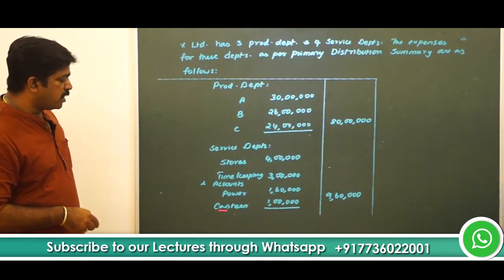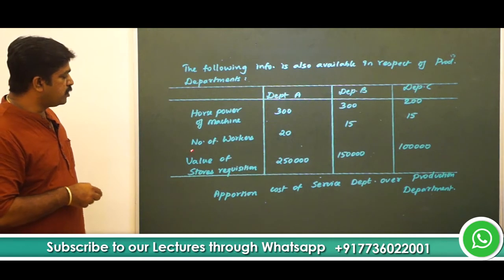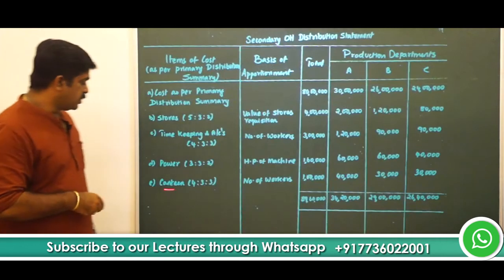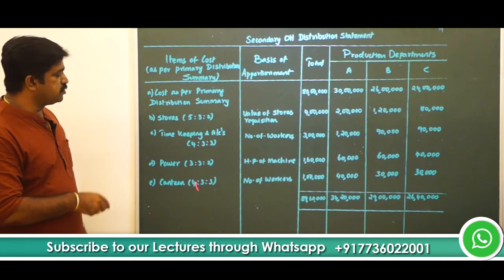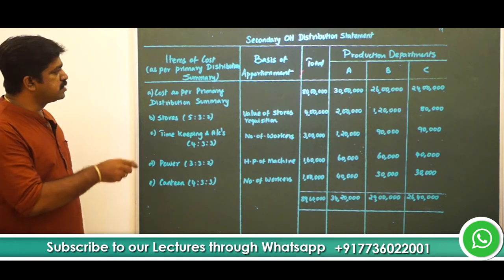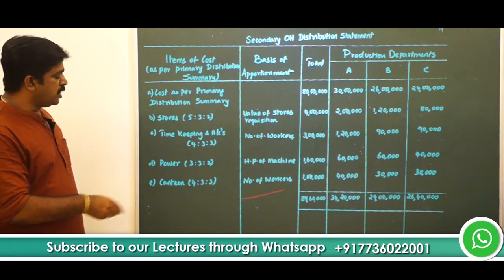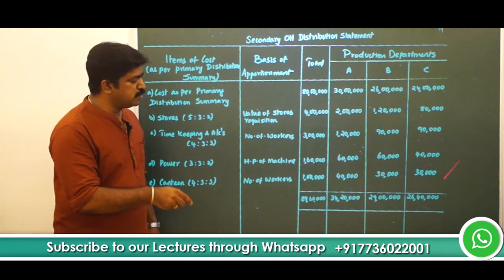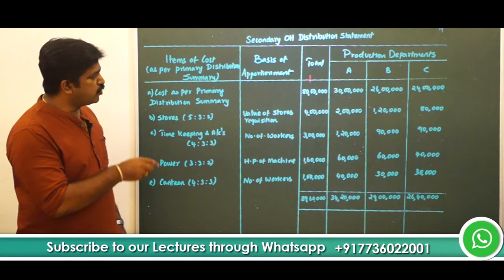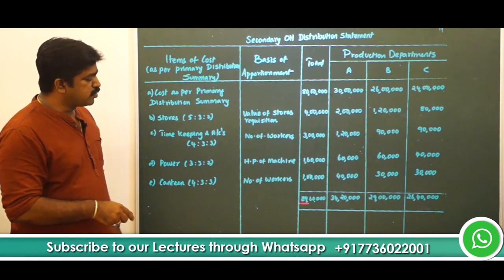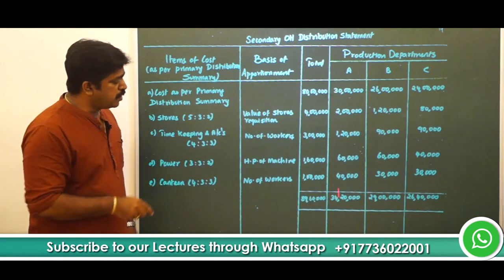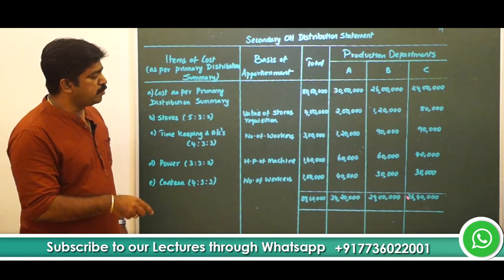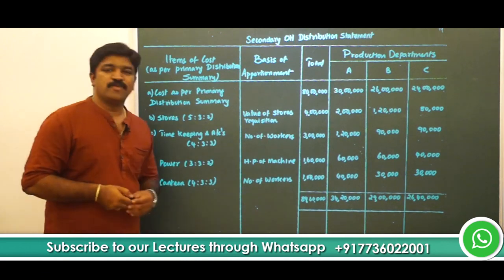Next, canteen — 1 lakh. This can be apportioned on the basis of number of workers in the ratio 4:3:3. The basis of apportionment is number of workers and the total amount is 1 lakh. Multiplied by 4, 3, and 3, you get 40,000; 30,000; and 30,000. Totalling everything: the overall total column comes to 89,60,000. Production department A — 34,20,000; production department B — 29,00,000; production department C — 26,40,000.